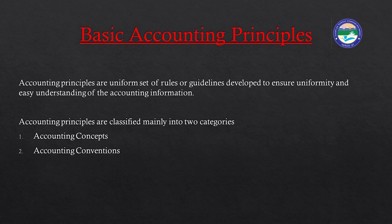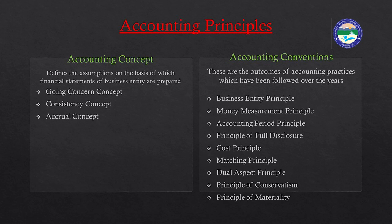Accounting principles are basically classified into two categories: the first is accounting concepts and the second is accounting conventions. Accounting concepts are defined as assumptions on the basis of which financial statements of the business entity are prepared. We have three accounting concepts: going concern concept, consistency concept, and accrual concept.